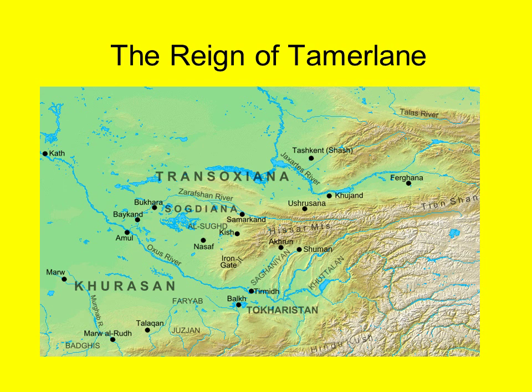After the death of Genghis Khan in 1227, the Mongol Empire was divided between his sons. Over the course of the next century, there was considerable rivalry among the descendants of Genghis Khan. Timur, who was also known as Tamerlane, appeared from these struggles in the 14th century as the dominant force in Trans-Akshana, which you can see here.